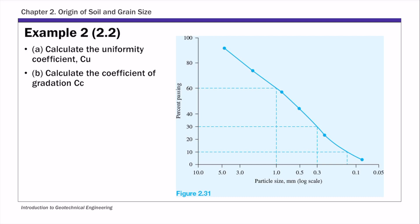To get these two coefficients, you need to get d10, d30, and d60 values. So first, we need to read these values from this curve. For d10, we start with 10% finer, or 10% passing, on the y-axis, and then read the corresponding value on the x-axis, which is the particle size. For this example, d10 is approximately 0.13 millimeters.